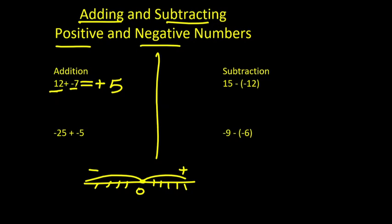In the second example, we are going to add two negative numbers. When the sign of the two numbers are the same, we choose the same sign — in this case negative — and add the two numbers. 25 plus 5 is 30, and the sign is negative. So we can say negative 30.